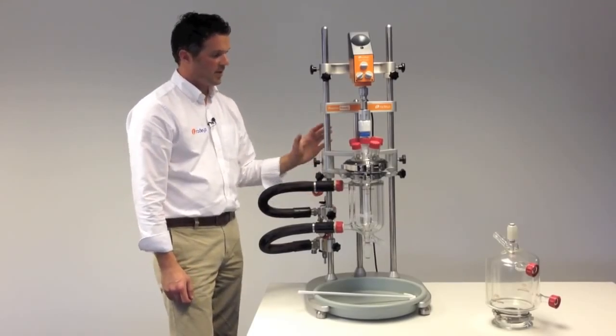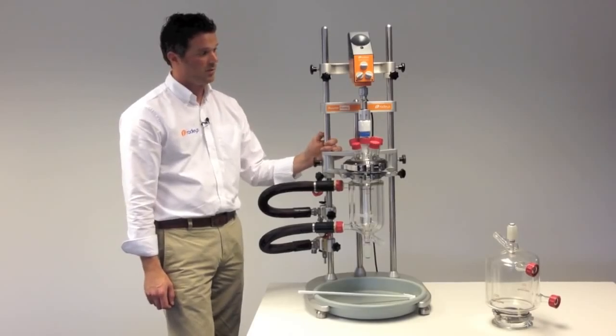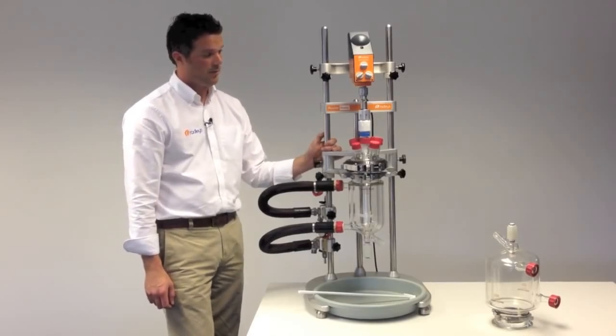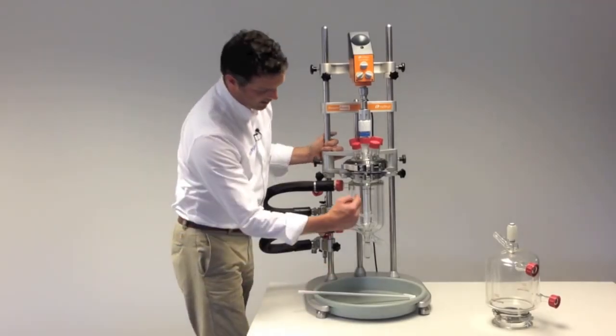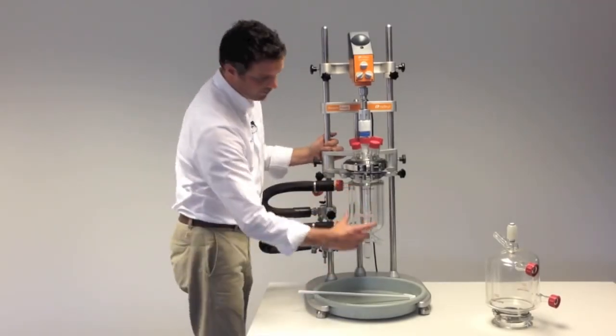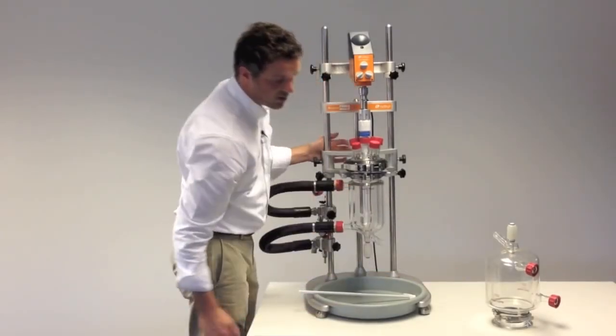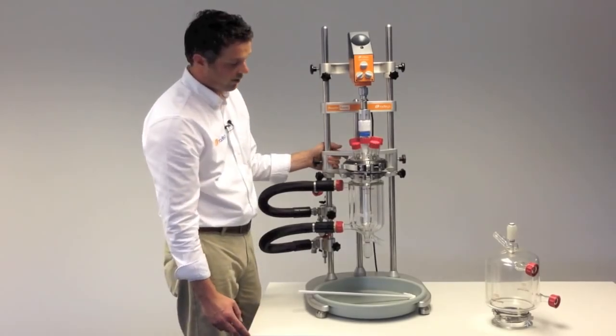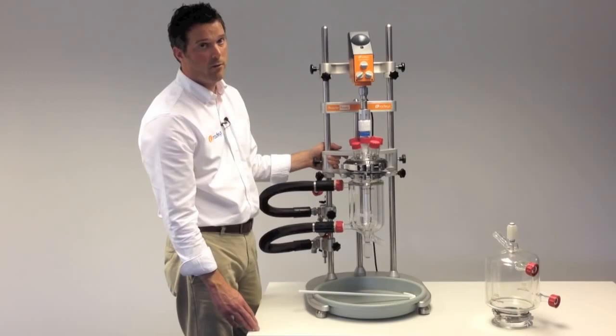This is the standard Reactor Ready framework. This will accept vessels from 100 milliliters up to 5 liters. This is a standard jacketed vessel, and then you can see here we've got the squatter process form vessel. We've also got vacuum jacketed vessels throughout the range.